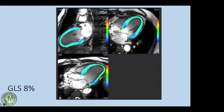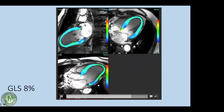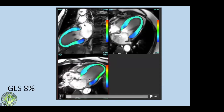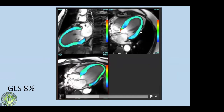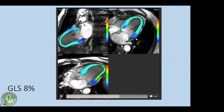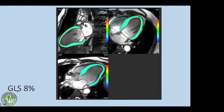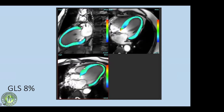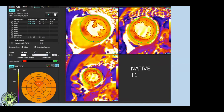CMR strain with feature tracking images were obtained. Global longitudinal strain is a better parameter for LV systolic function than ejection fraction alone, as it captures longitudinal deformation. All new prognostic markers are based on global longitudinal strain, which is again helpful for the clinician.